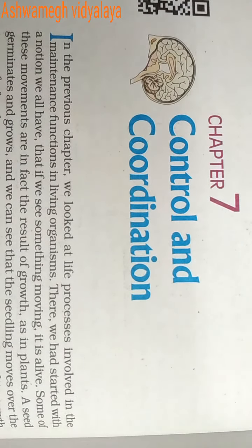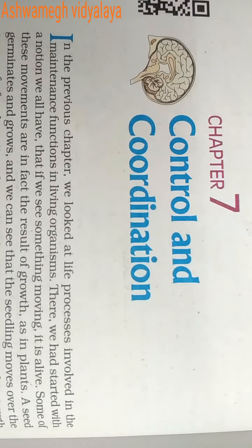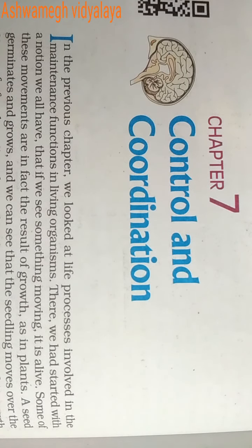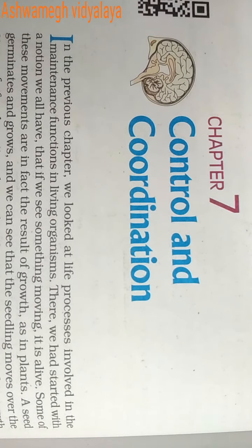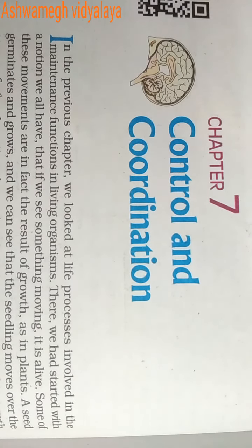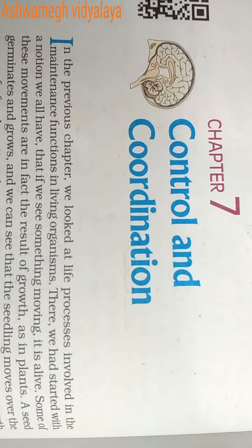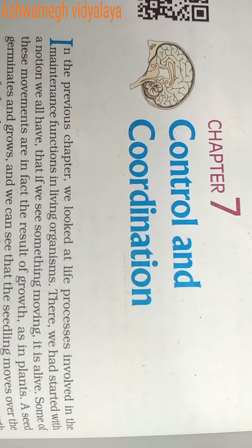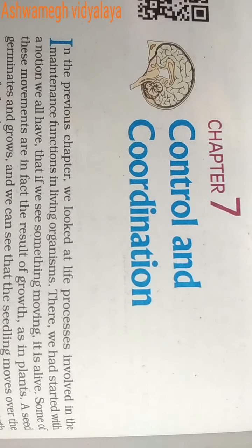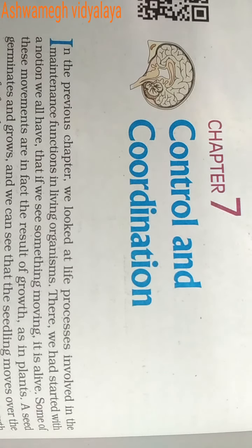Hello students. In this video we start a new chapter — Chapter 7: Control and Coordination. In the last chapter we discussed life processes and how they maintain their functions in living organisms. Now in this video we discuss how the body's functions are controlled and coordinated.